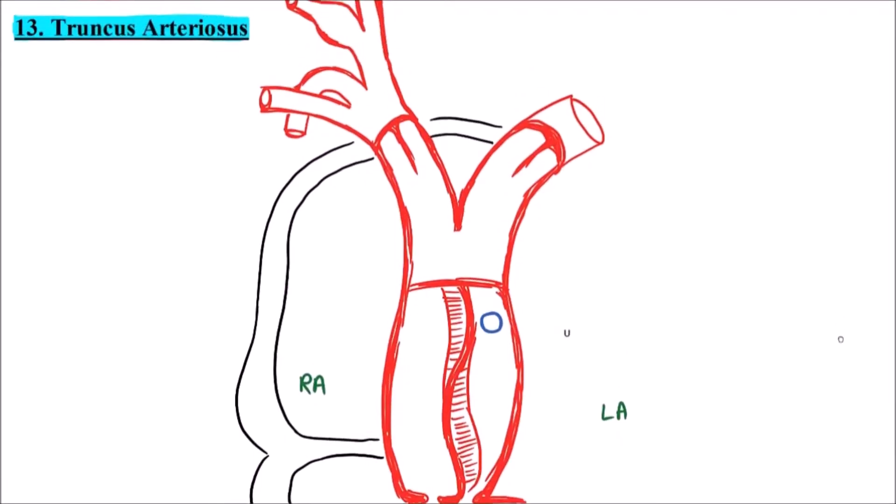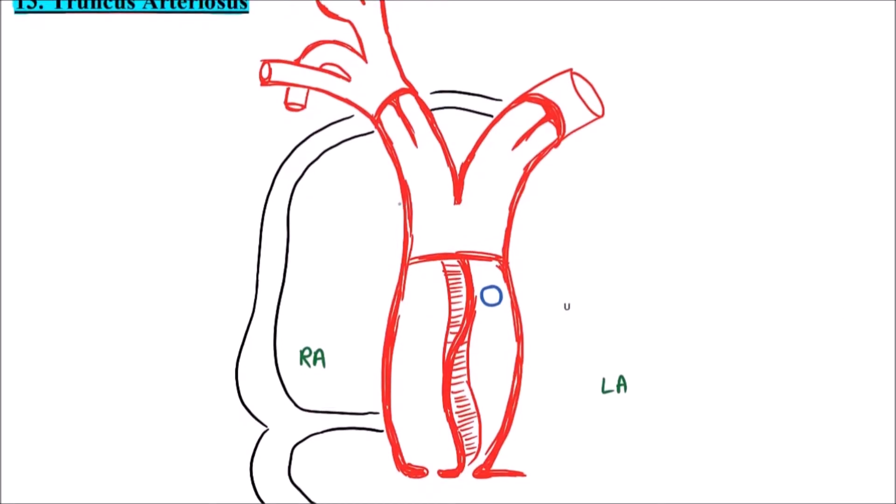This structure which we are observing is truncus arteriosus. These are the pulmonary valves. These pulmonary valves divide the spirally twisted cavity of truncus arteriosus unequally into two chambers.